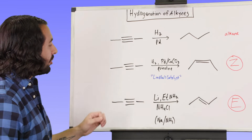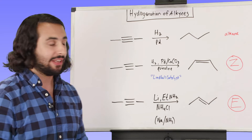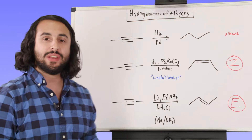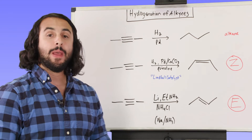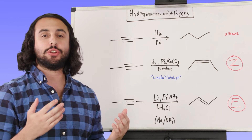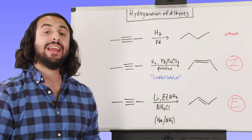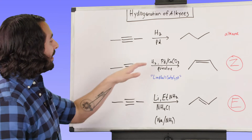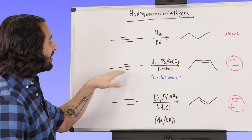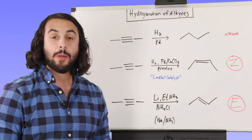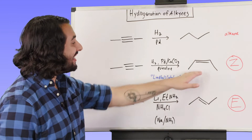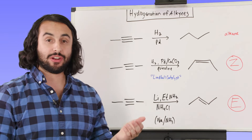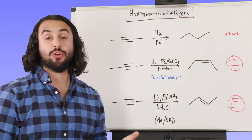The first is called Lindlar's catalyst. It is hydrogen with palladium that has been poisoned, and what that does is limit its ability to hydrogenate — it is only able to hydrogenate alkynes and not alkenes. So it's going to interact with the alkyne and produce an alkene, but it will specifically produce the Z alkene. Remember when we have an alkene, we can have two different kinds of stereochemistry: E or Z.